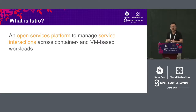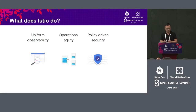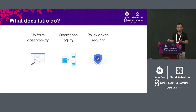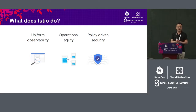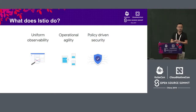Istio is an open service platform to manage service interactions across container and VM-based workloads. There are three main challenges in service communications: monitoring, connectivity, and security. Istio solves all three problems for you. First, Istio provides you uniform visibility into your service communications — you get latency, request patterns, errors, all sorts of telemetry you want to know.